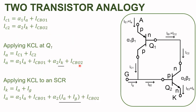Considering SCR as a node, the entering currents are the anode current and gate current, and the leaving current is the cathode current. Applying KCL: IK equals IA plus IG. Substituting IK into the earlier equation, IA equals alpha1 IA plus ICBO1 plus alpha2 times (IA plus IG) plus ICBO2.